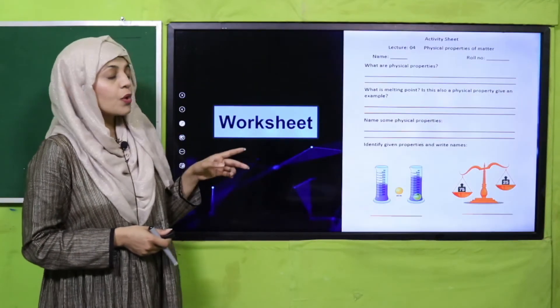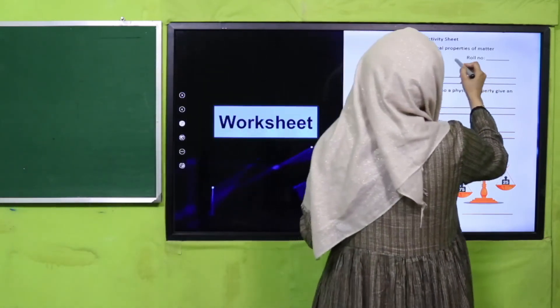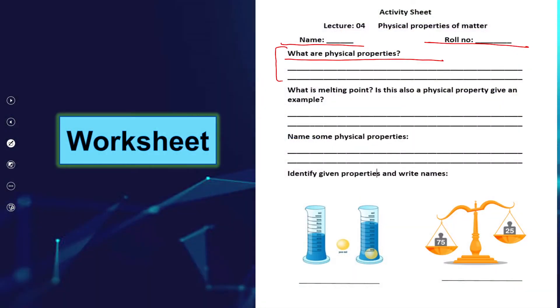Now is the time for practice. You can download this worksheet from the description box below this video or you can get it in print form from your teacher. Write down your name and roll number. What are physical properties? Physical property can be judged by the five senses. What is melting point? Is this also a physical property? Give an example. Name some physical properties. Identify given properties and write names. For example, this is floating and sinking, this is an example of mass.